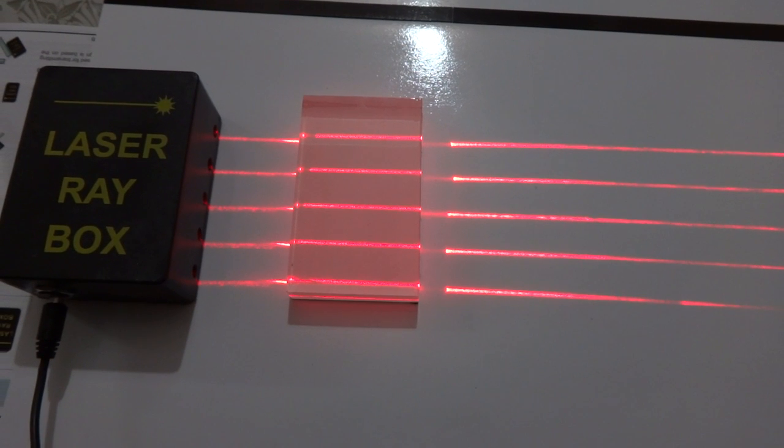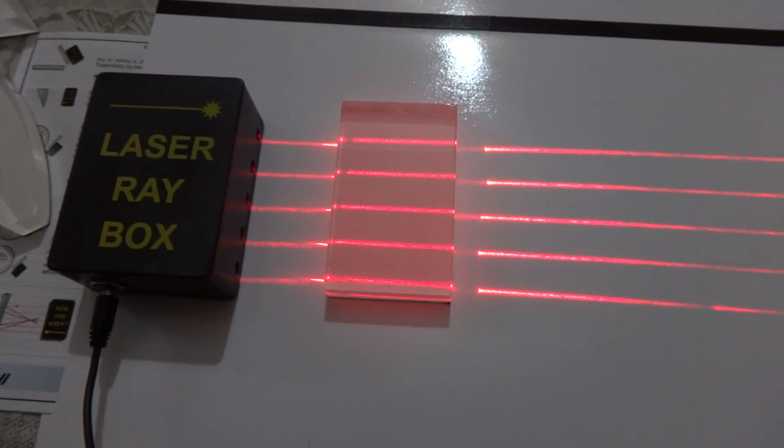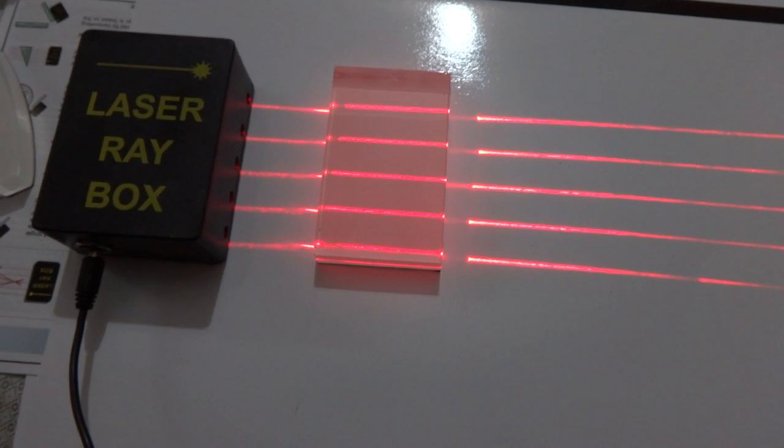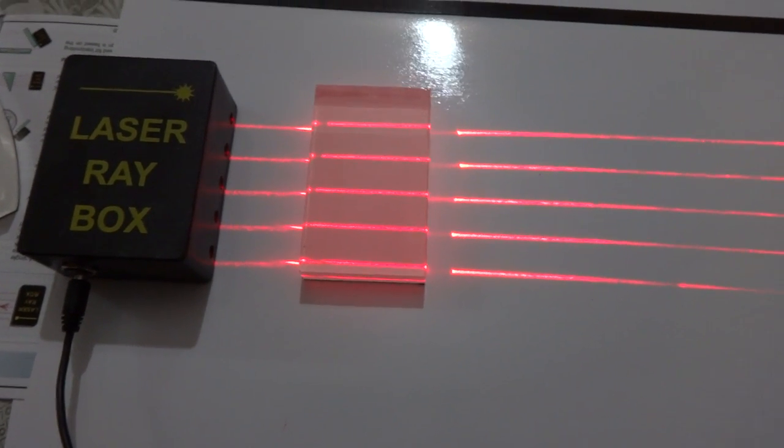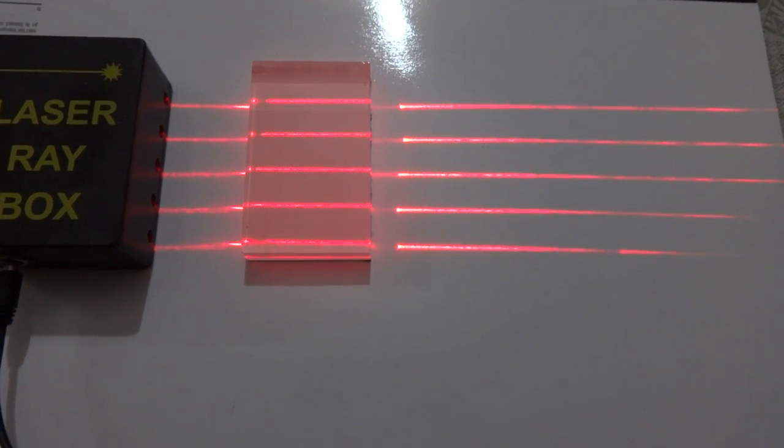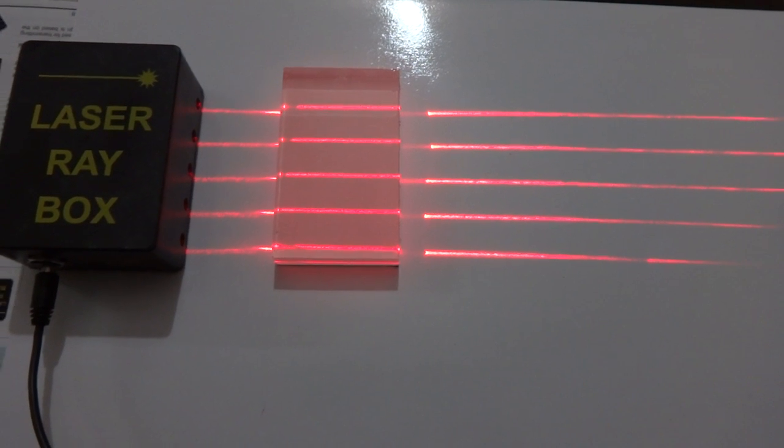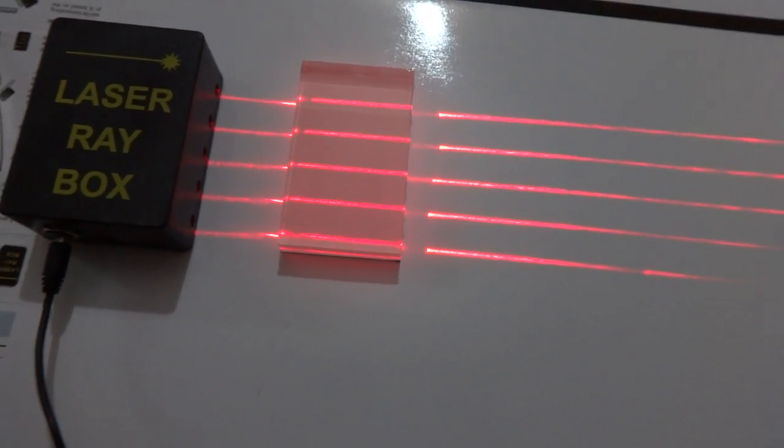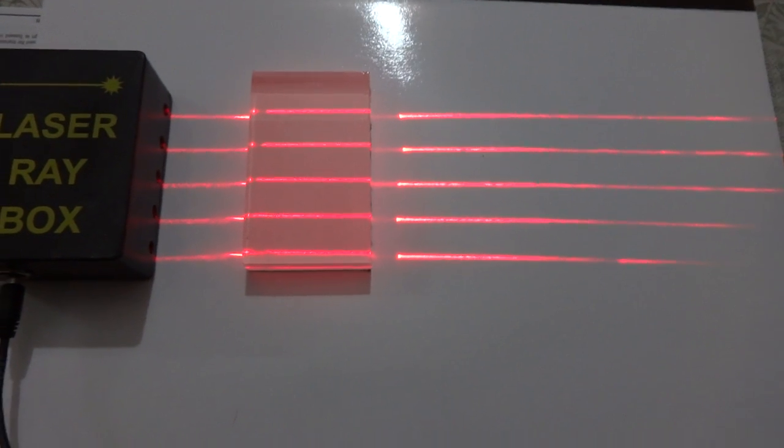If the light goes from rarer to denser, its speed gets reduced and it comes closer to the normal. If the light goes from denser to rarer, its speed will be increased and it moves away from the normal. So, there are many phenomena or many incidents that take place in day-to-day life which are related to the refraction.